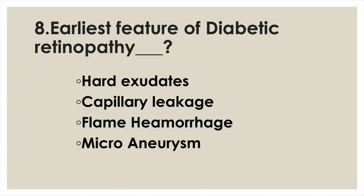Earliest feature of diabetic retinopathy: Option A: Hard exudates. Option B: Capillary leakage. Option C: Flame hemorrhage. Option D: Microaneurysm. Answer: Option D, Microaneurysm.